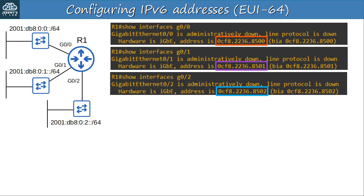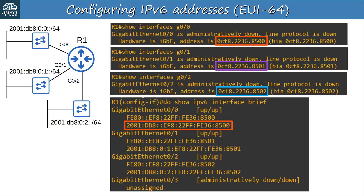If you want, try pausing the video here to figure out the IPv6 address generated on each interface. Here's SHOW IPv6 INTERFACE BRIEF. Notice that EUI-64 changed the C of the MAC address to an E, and here's the FFFE inserted in the middle of the MAC address to make it 64 bits in length. Here are the addresses of G0-1 and G0-2 — they are very similar because the MAC addresses used to generate the IPv6 addresses were very similar. EUI-64 allows routers to automatically generate an IPv6 address by expanding their MAC address to a 64-bit interface ID, which is then combined with the specified IPv6 address prefix.